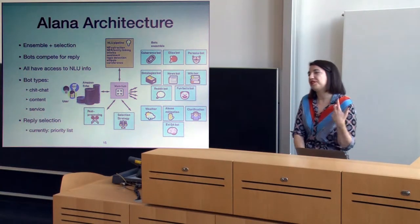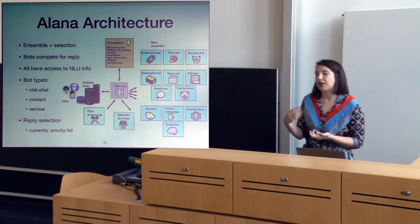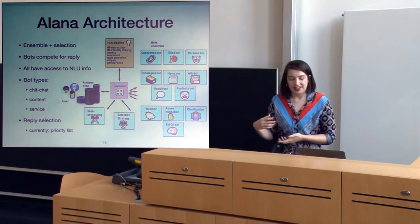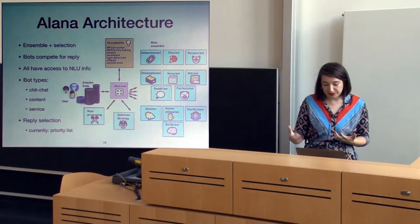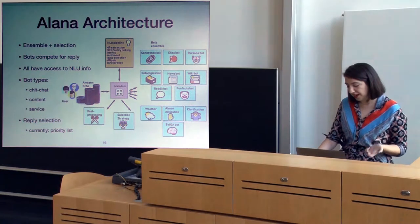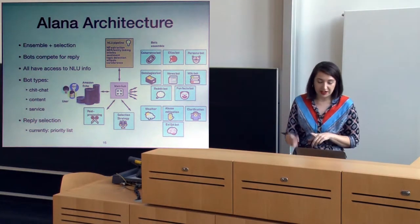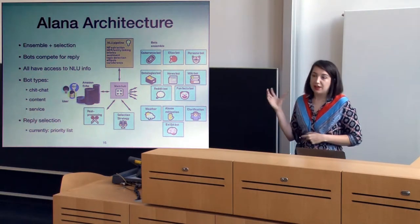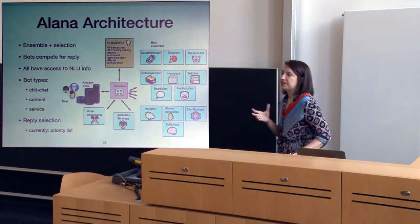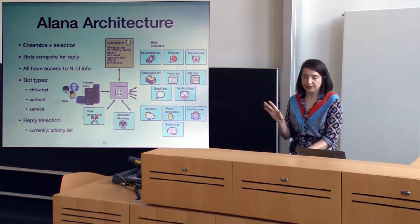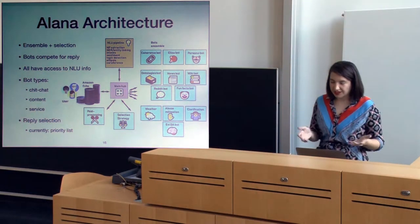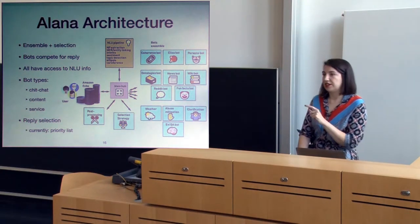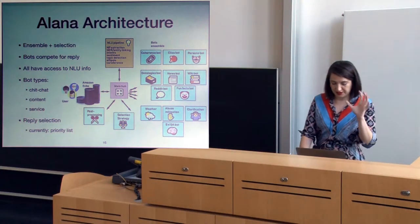We had a weather bot, a clarification bot for handling ambiguous entity references, a Q&A bot provided by Amazon — the same one built into Alexa — and an abuse mitigation bot, which I'll tell you more about since it's my work. When you have all these bots competing for a response, you obviously have to select a response somehow.